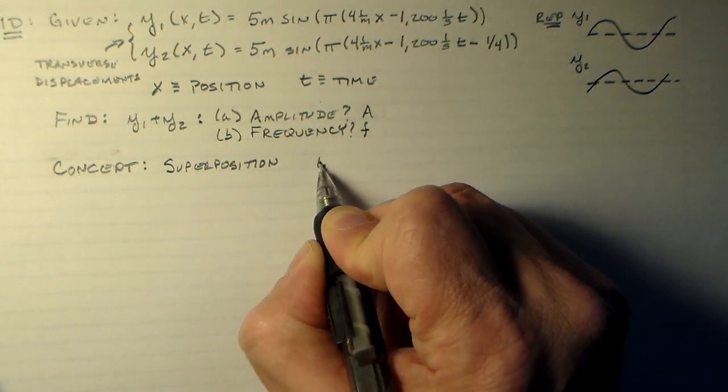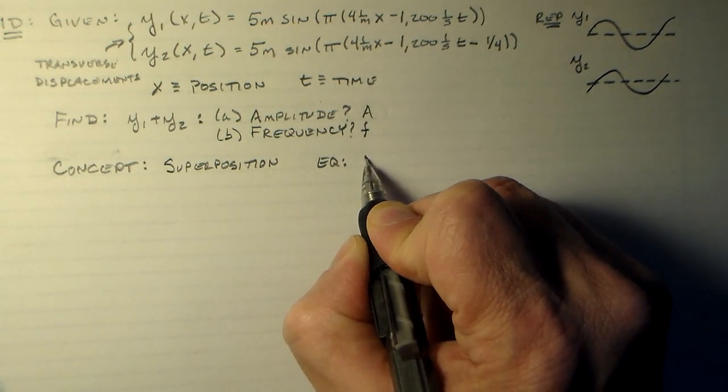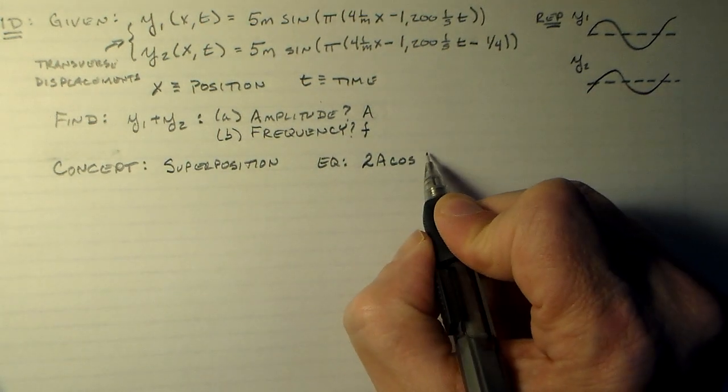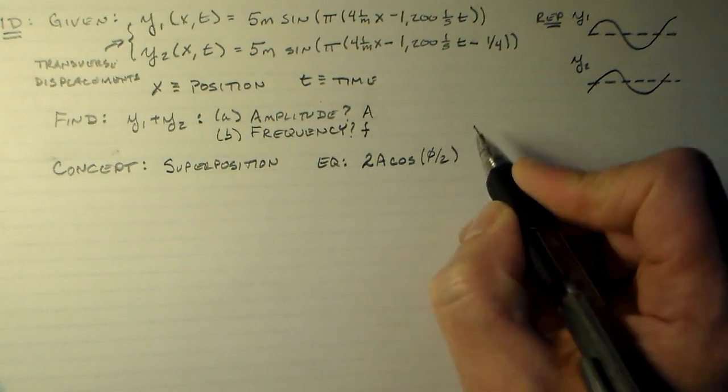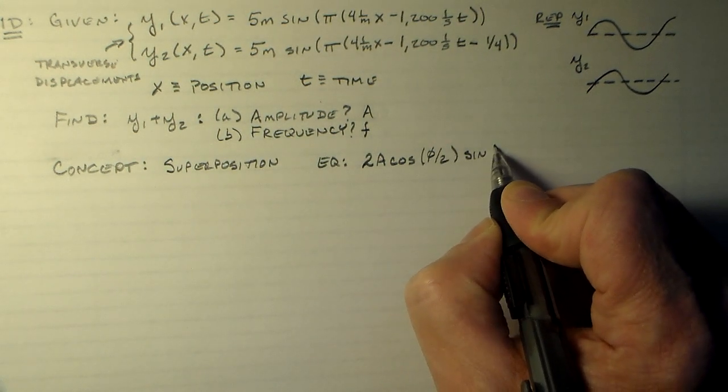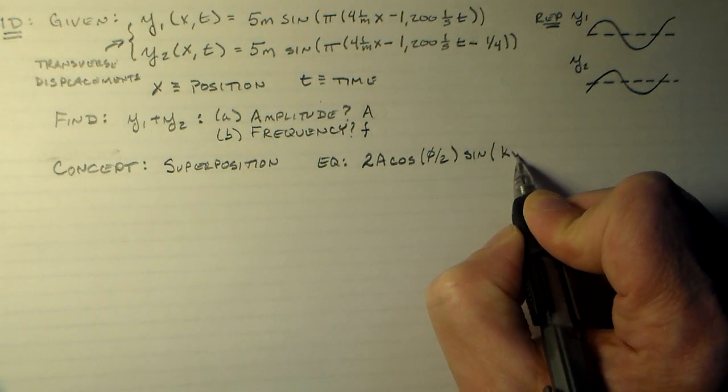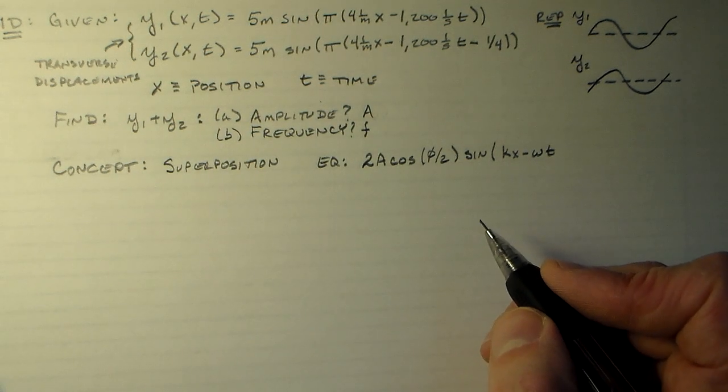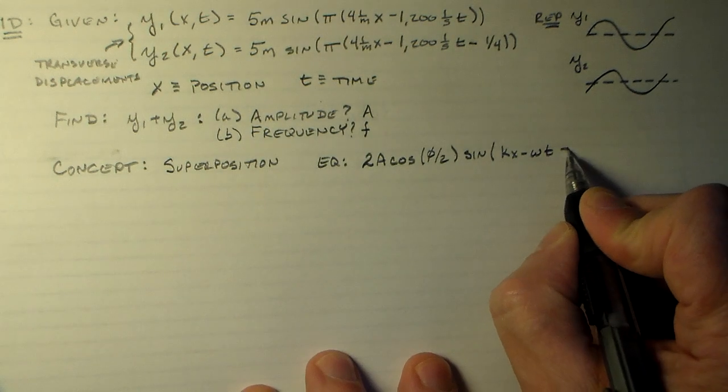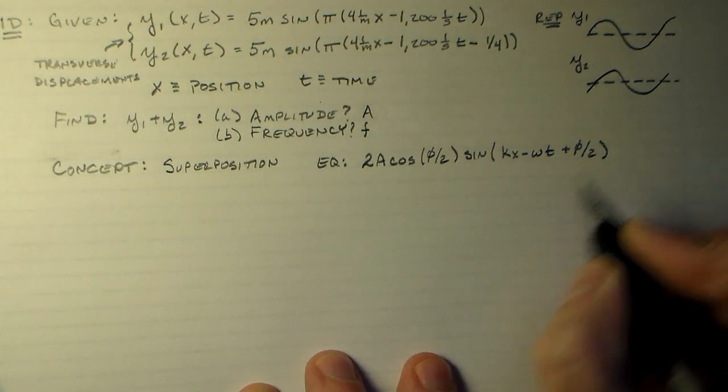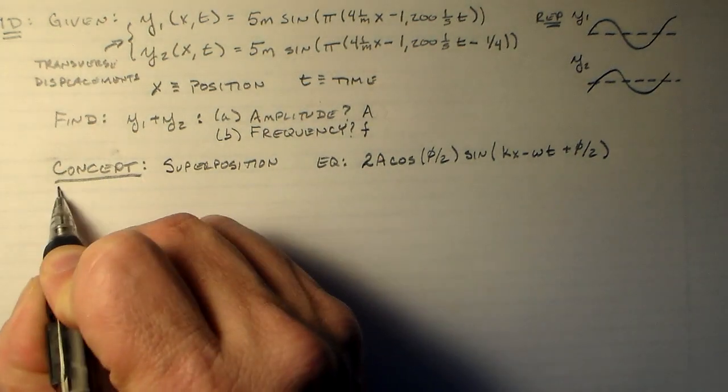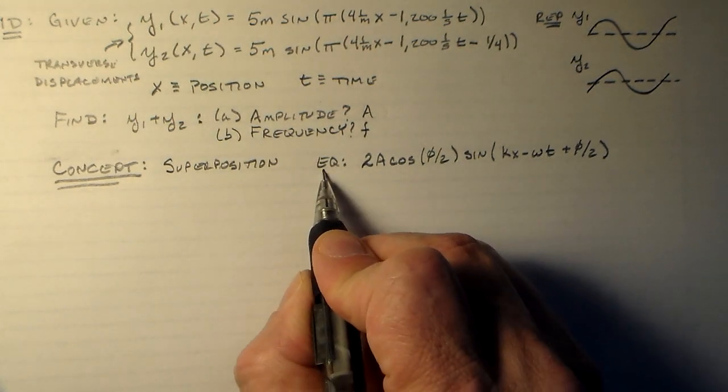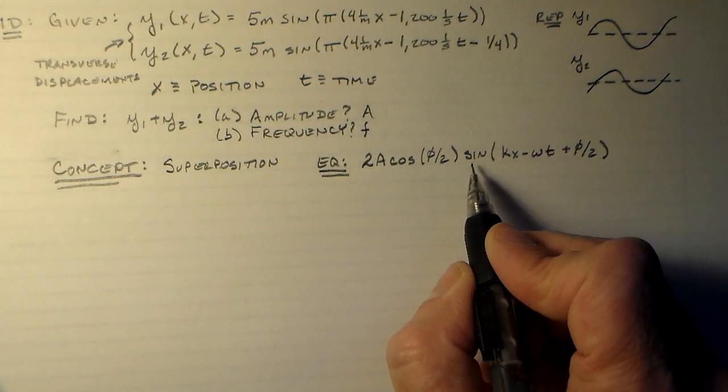And the equation, the book actually ends up having an equation just for this which is 2A cosine phi over 2 times sine of kx minus omega t plus phi over 2. Okay. There's the concept, just superimposing these waves adding them up. We've done a little bit of that already and here's the equation that we're going to use.